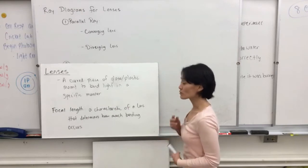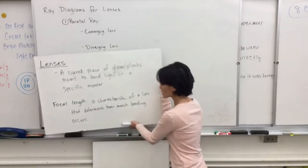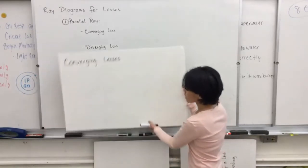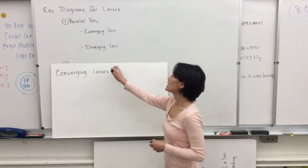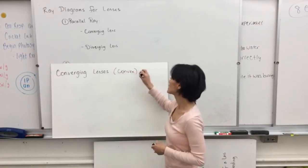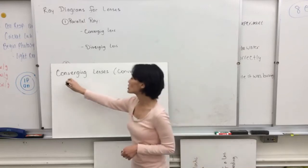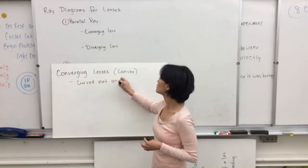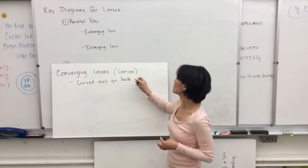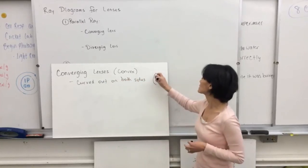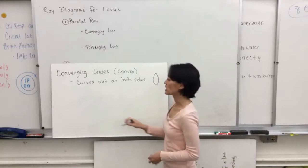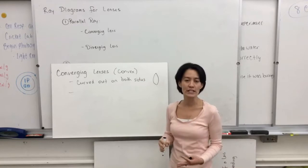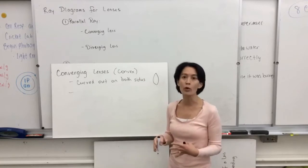We're going to look at initially two types of lenses. The first is called a converging lens — another name for it is a convex lens. A converging lens is curved out on both sides, so it looks like a magnifying glass. When parallel rays of light hit a converging lens, the rays bend towards the focal point of the lens.